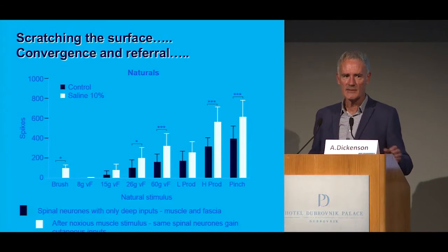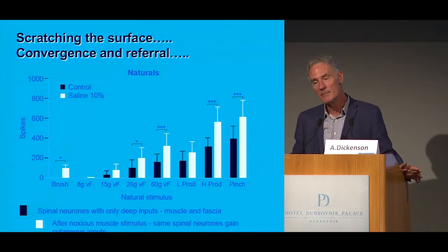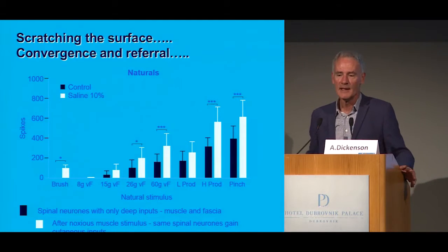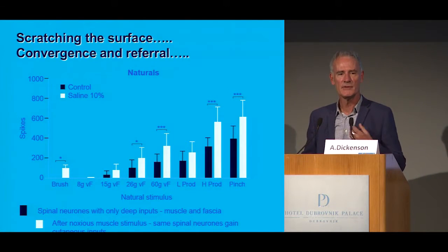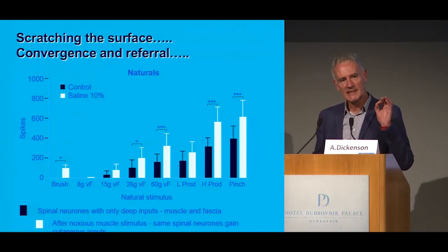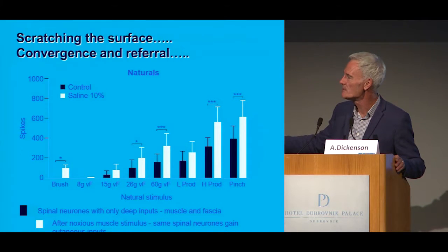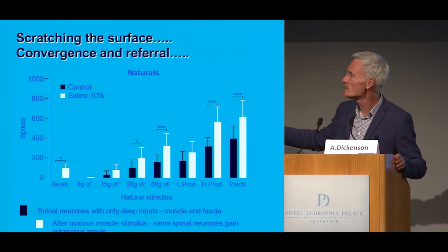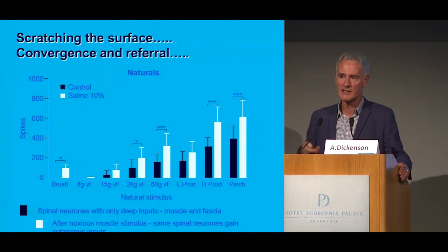We don't fully understand the contribution of pathways from deep tissue. Looking at muscle — which is remarkably similar to joints — in normal conditions, spinal cord neurons that preferentially respond to muscle input have no cutaneous input. But if you sensitize the muscle and produce a peripheral sensitization, they gain a cutaneous input — allodynia — and have hyperalgesia responses to the muscle tissue. So when you sensitize, it's not just the primary area that becomes more responsive; there's a spread.